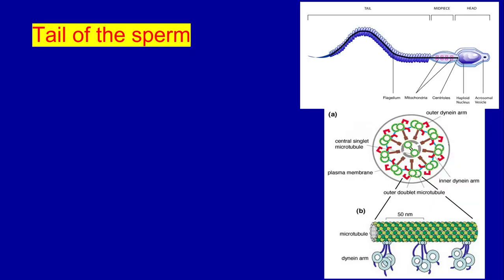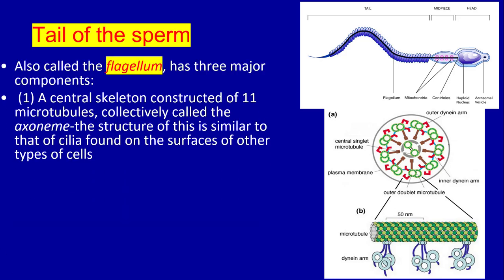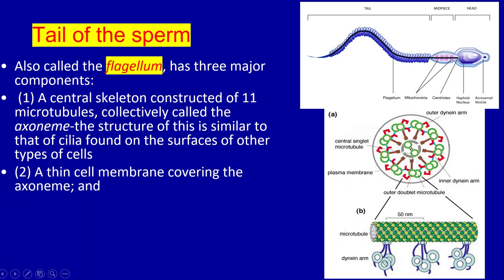The tail of the sperm, also called the flagellum, has three major components: a central skeletal structure of 11 microtubules collectively called the axoneme, whose structure is similar to that of cilia found on the surface of other types of cells; a thin cell membrane covering the axoneme; and a collection of mitochondria surrounding the axoneme in the proximal portion of the tail, called the body of the tail.